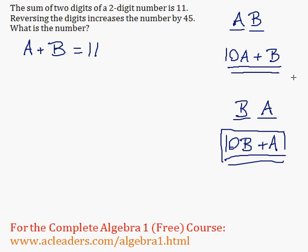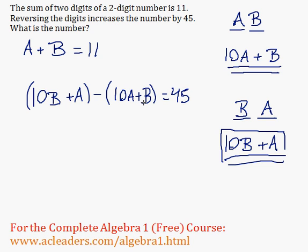So once we reverse the digits, the number increases by 45. So I can say that 10B plus A minus 10A plus B is equal to 45, because this number here exceeds the original one by 45, since it has increased.